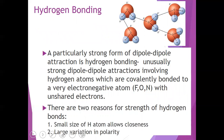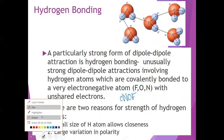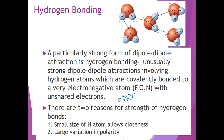Hydrogen bonding is a particularly strong form of dipole-dipole attraction. It is unusually strong, involving hydrogen atoms covalently bonded to a very electronegative atom — fluorine, oxygen, or nitrogen — with unshared electrons. Because hydrogen appears in many different compounds, hydrogen bonding is sometimes mistakenly labeled. An acronym to remember is ENOUGH — standing for the very Electronegative atoms: Nitrogen, Oxygen, or Fluorine, with Hydrogen.